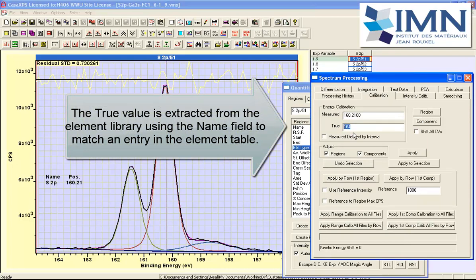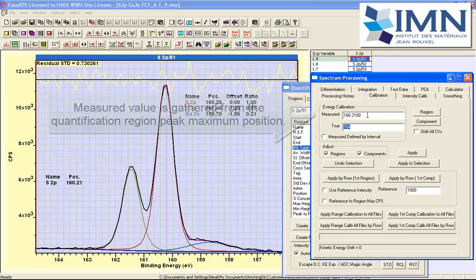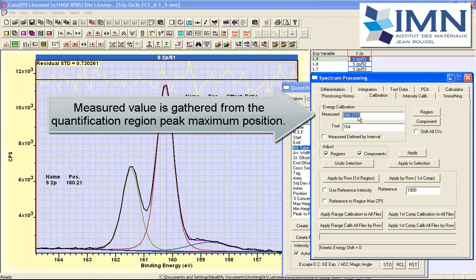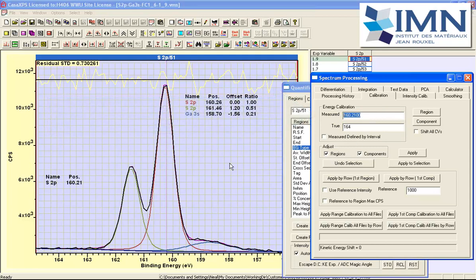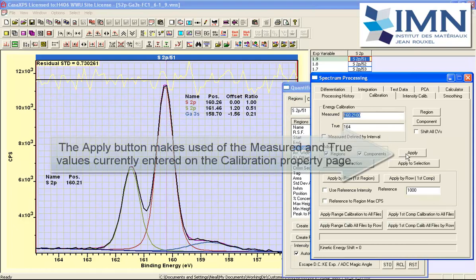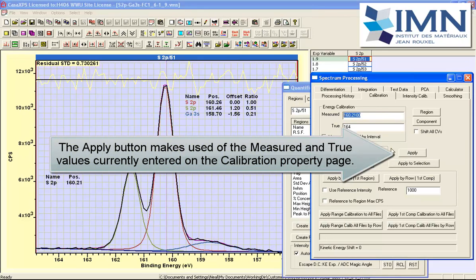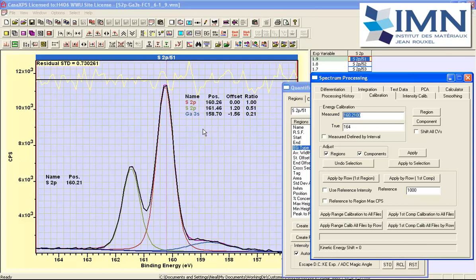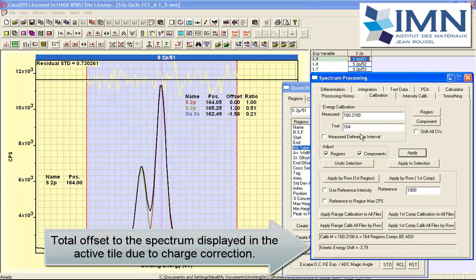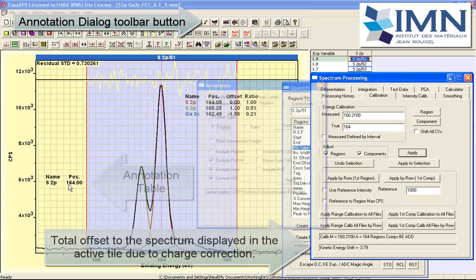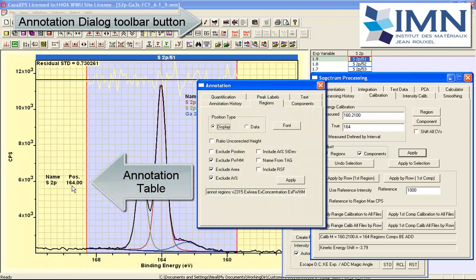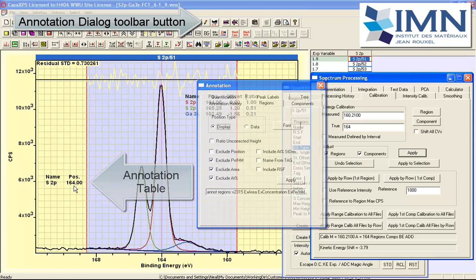So we have a true and a measured value that are entered here on the calibration property page. We have got the regions and components ticked because we want these to shift at the same time. And then it is just a question of saying apply. And the apply button is going to act on the active spectrum in the active tile only. And when I press apply you can see that this table which is a regions table indicates the position of the region and it now matches the true value.